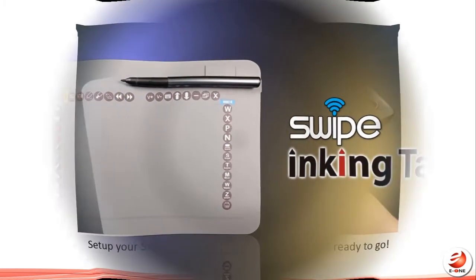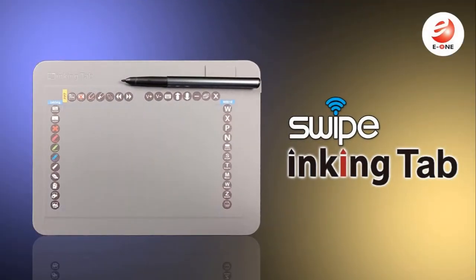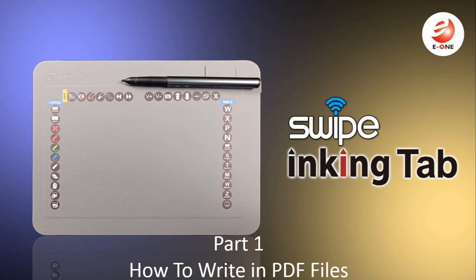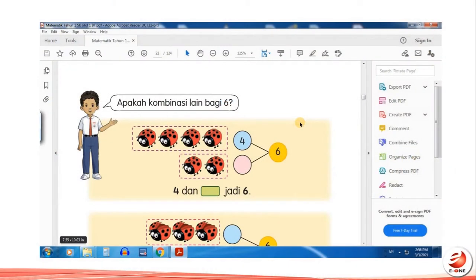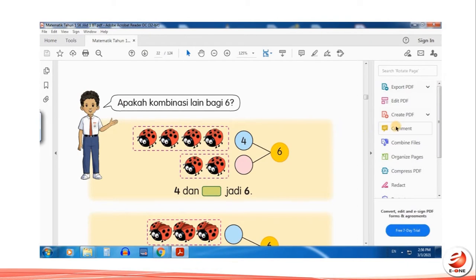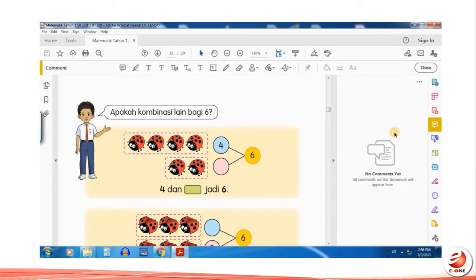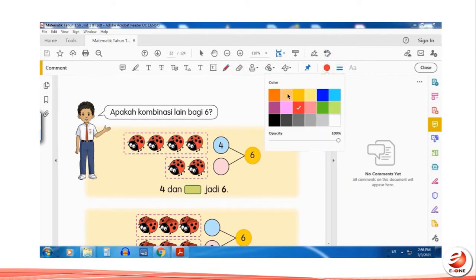Part 1: How to Write in PDF Files. To start, lightly tap your Swipe Inking Tab with your stylus pen, and click on Comment. Then click on Pencil Tool. Click on the Color Icon to change pen color and start writing.